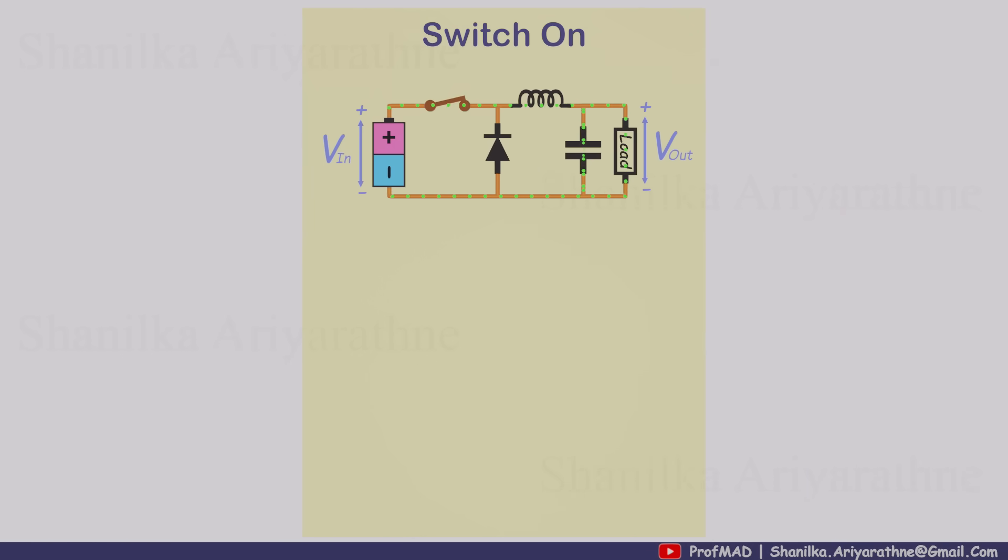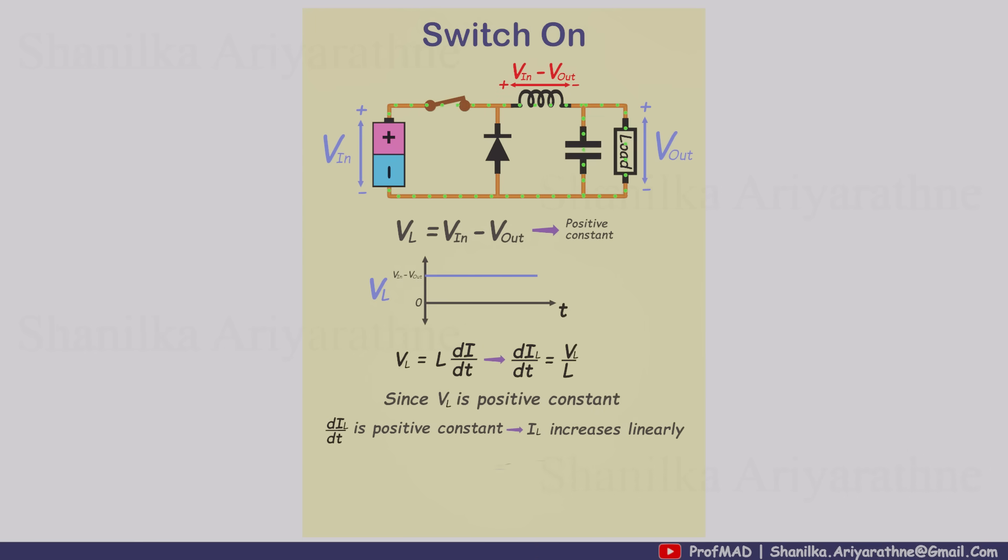First, the switch on case. When the switch is closed, the voltage across the inductor is V in minus V out, and since both V in and V out are constant, that means the inductor sees a constant positive voltage.